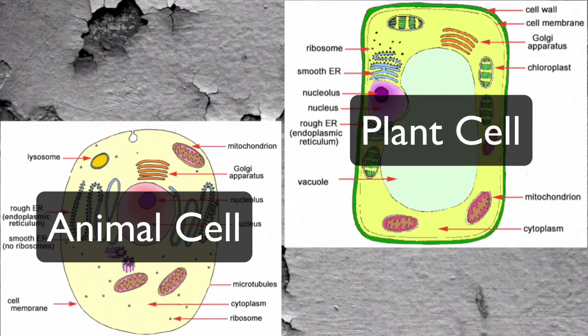Organelles work together to perform specific functions. For example, the cell membrane and the cell wall work together to protect and support the cell. A more complex example of organelles working together is called protein synthesis.